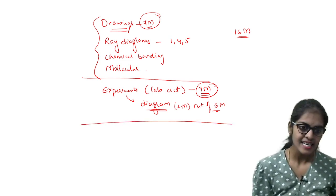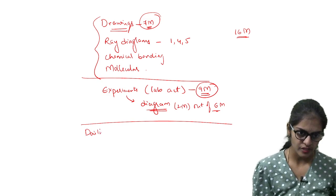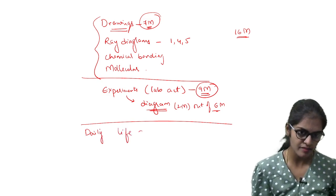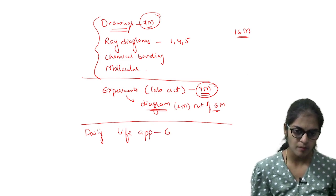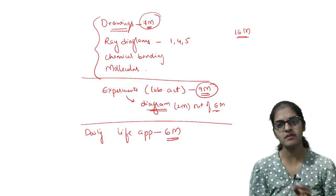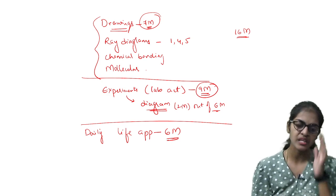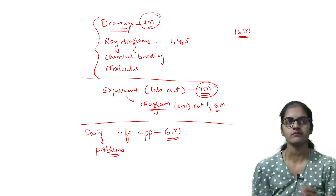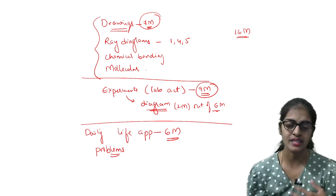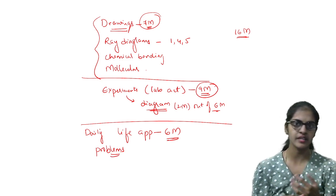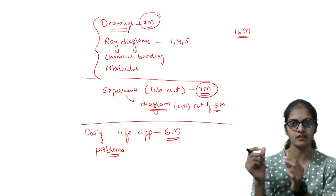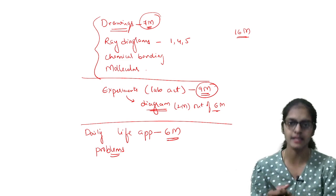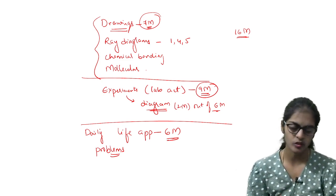After this, daily life application. You will have questions on daily life application. What is this daily life application? I will tell you. Six marks will be from daily life application. For example, simple problems like what is the focal length of the lens which we need to use for a particular defect in the eye.